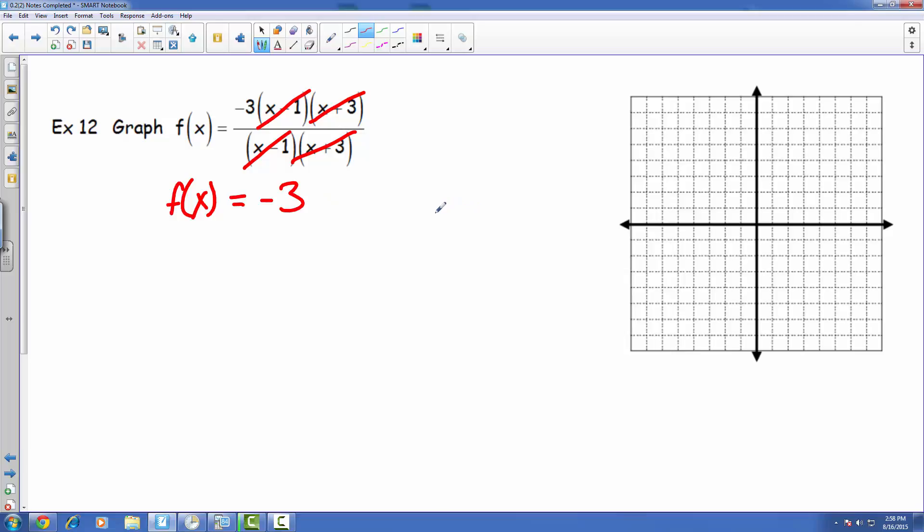As a result, what we should be seeing, since there's no x's at all here, is pretty much just a straight line, going like this, at y equals negative 3.